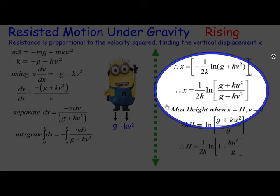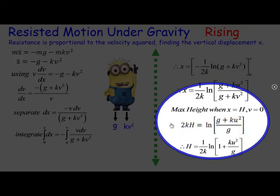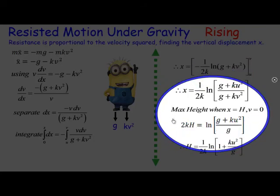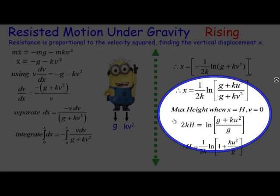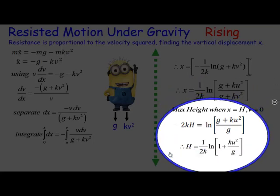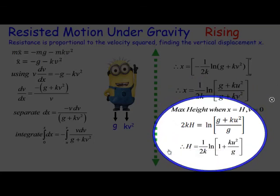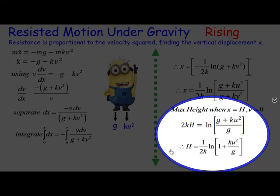Now if you want to get the maximum height, sometimes you're asked to get the maximum height, you need to set, well let x be h the maximum height, and set the velocity to be zero. Then you can actually get a height expression here in terms of the initial velocity and gravity. You can see here h is equal to one on two k ln one plus k u squared all over g.